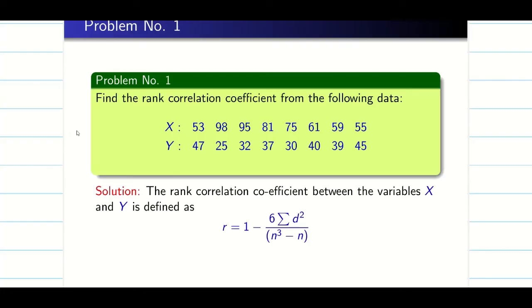The formula is 1 - 6Σd²/(n³ - n). Also, you should be very careful: n you have to count from one variable. You should not count from both variables.